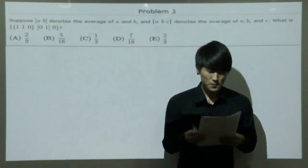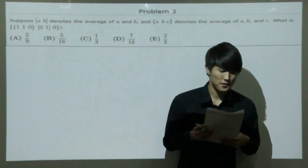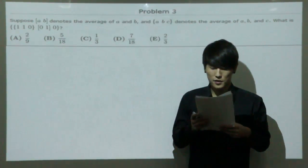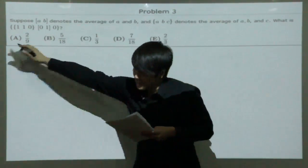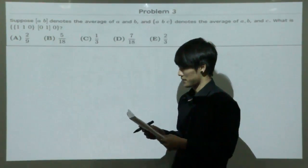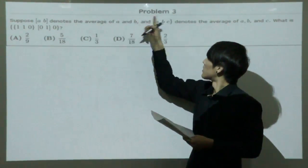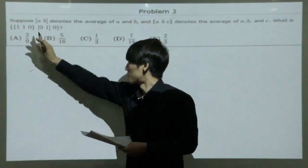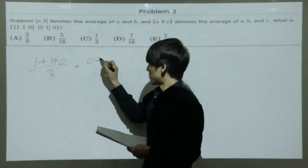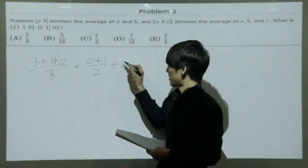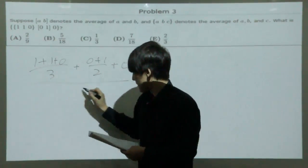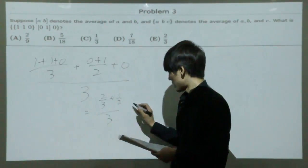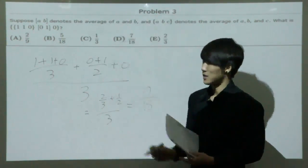Problem number 3. Suppose AB denotes the average of A and B, and ABC in this format denotes the average of AB and C. What is this? Basically all you have to do is express this using these two. This would become 1 plus 1 plus 0 divided by 3 because it's the average of these three numbers, then the average of 0 and 1, and you would have to get the average of these three values, which is divided by 3. This becomes 2/3 plus 1/2 over 3, that equals 7 over 18. Choice D is the correct answer.